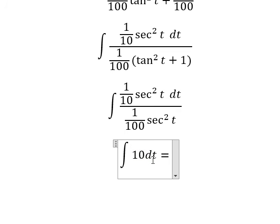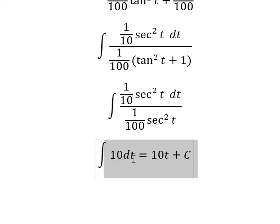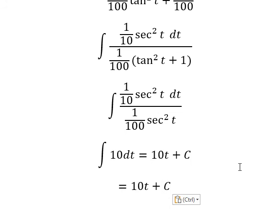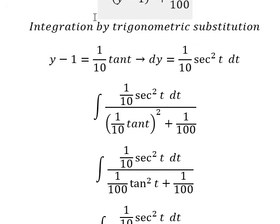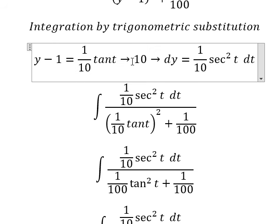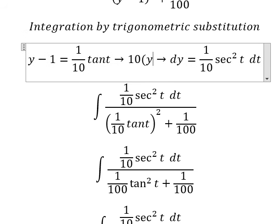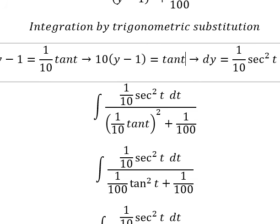The integration of dt gives us t, and I will add the constant c. About t, I will put number 10 to the left, and we have 10 multiplied by (y minus 1) equals 10t.